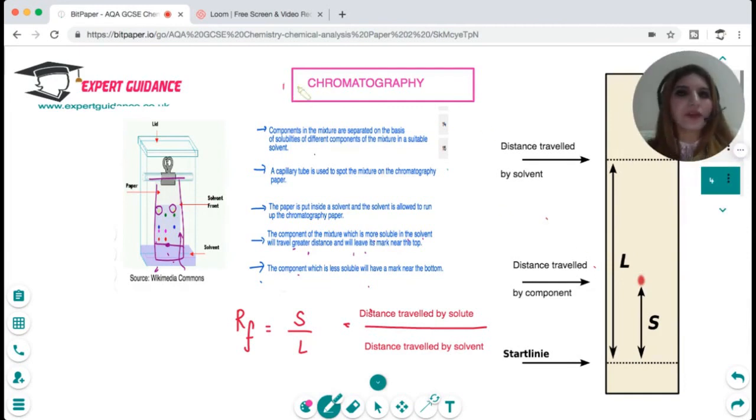There's another way where you can find the different components of a substance by chromatography. We discussed that a little bit in paper one. In chromatography, the components in a mixture are separated on the basis of solubility of different components of the mixture in a suitable solvent.